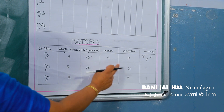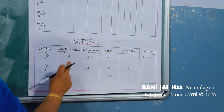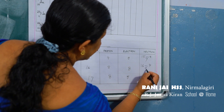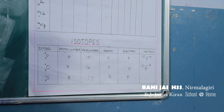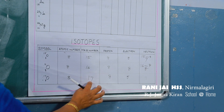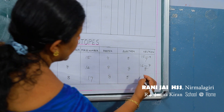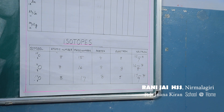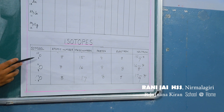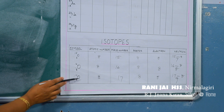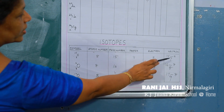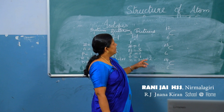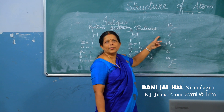Now to find the number of neutrons: mass number minus atomic number. For O-15: 15 minus 8 = 7 neutrons. For O-16: 16 minus 8 = 8 neutrons. For O-17: 17 minus 8 = 9 neutrons. These isotopes differ in mass number because the number of neutrons is different.